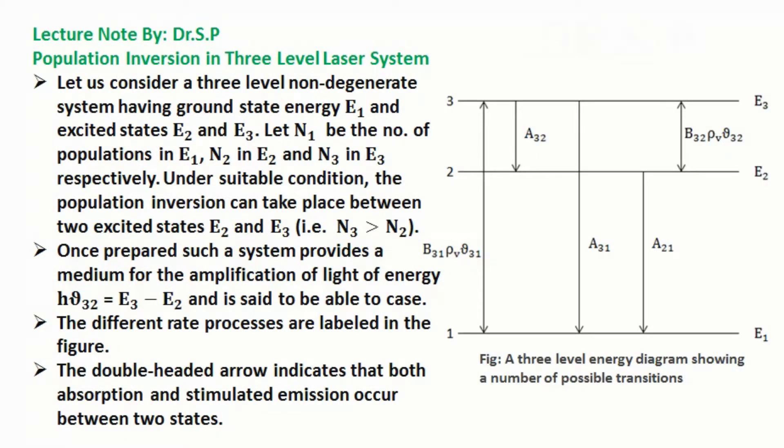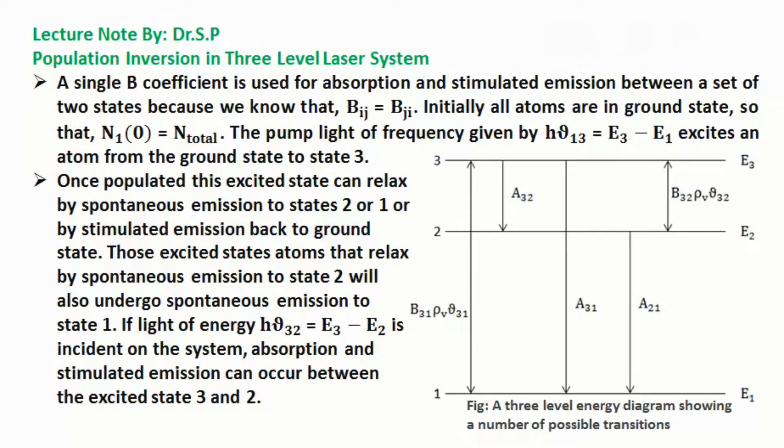The different rate processes are labeled in the figure. The double-headed arrow indicates that both absorption and stimulated emission occur between two states. A single B coefficient is used for absorption and stimulated emission between a set of two states because we know that Bij equals Bji.